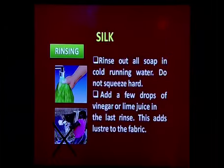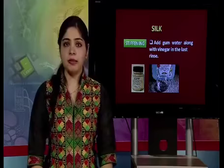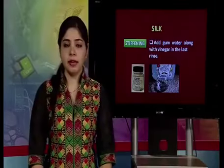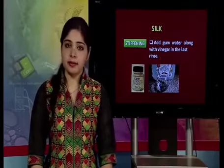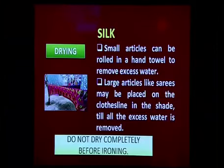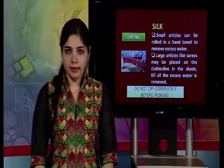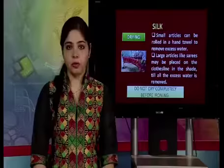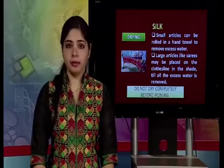For rinsing silk, rinse out all the soap in cold running water — do not squeeze hard. Add a few drops of vinegar or lime juice in the last rinse to add luster to the fabric. For stiffening, add gum water along with vinegar in the last rinse so the silk retains its shape, shine, and luster. For drying, roll silk articles in a hand towel to remove excess water; large articles like sarees may be placed on a clothesline in the shade.